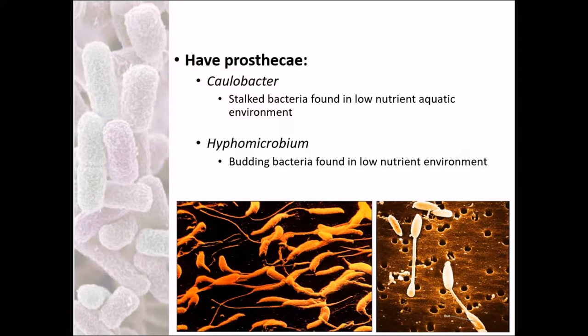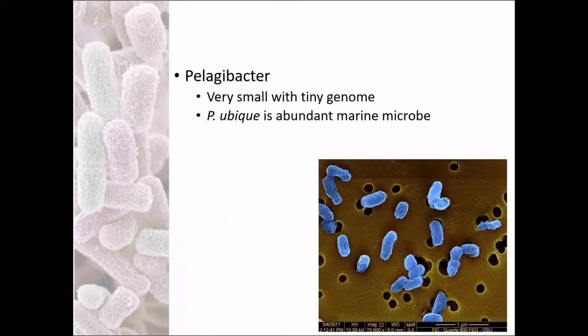Organisms having prosthecae include Caulobacter and Hyphomicrobium. We have discussed about these in our previous section where we were discussing about stalked bacteria. Pelagibacter is one of the most important organisms known right now because it is one of the smallest genome-containing organisms, while it is also the most abundant marine microbe.